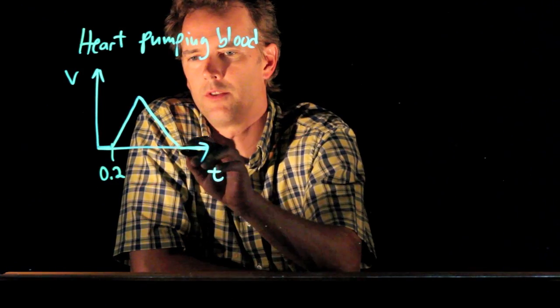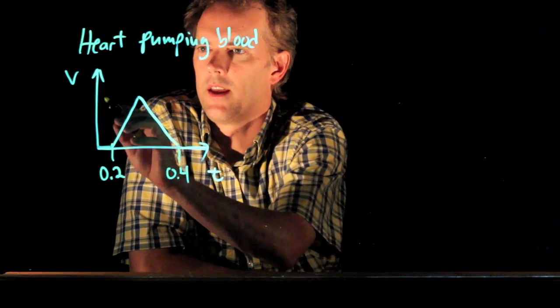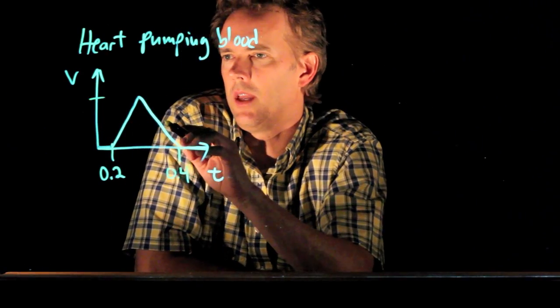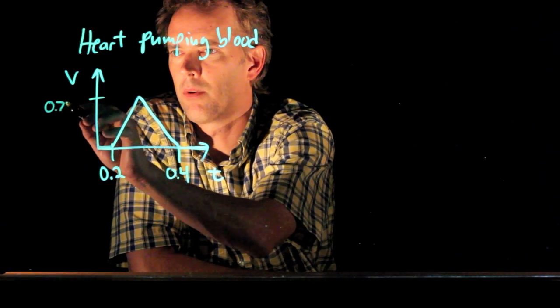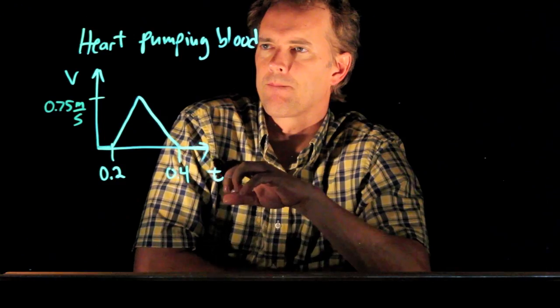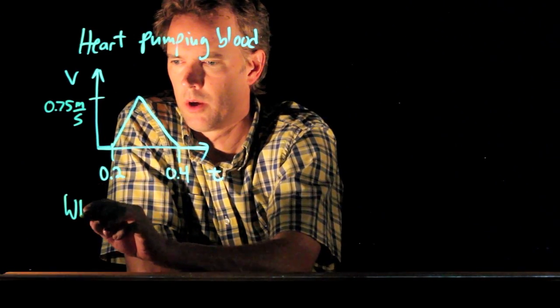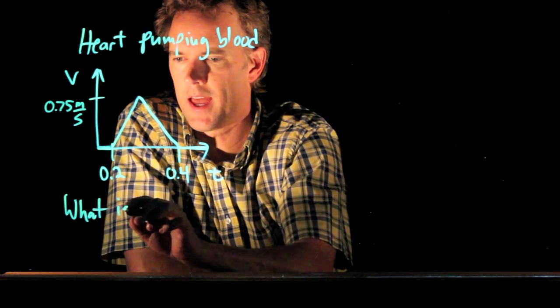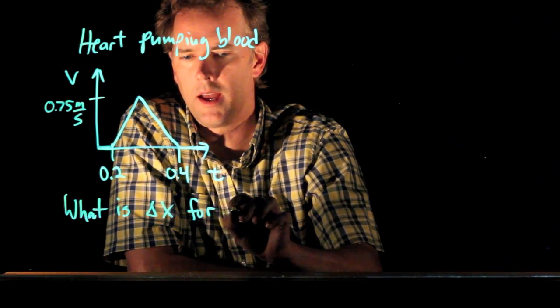This is about 0.2 seconds to about 0.4 seconds and the maximum speed that you reach is about 0.75 meters per second. Okay, and now let's ask the following question: What is delta x for a beat?